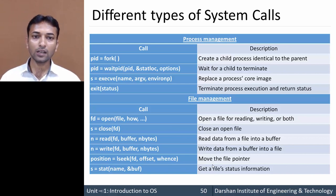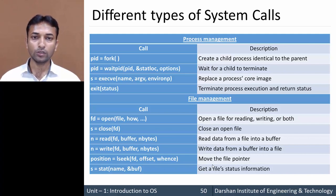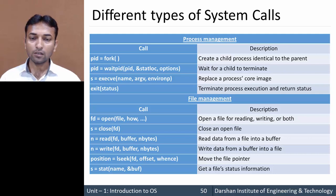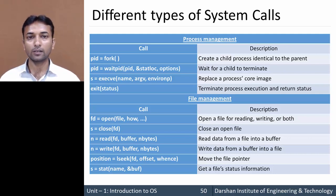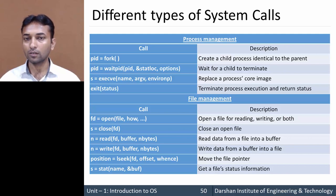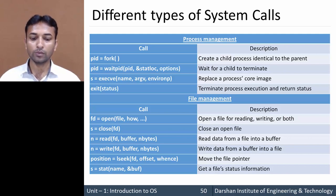So these are the various types of system calls in Unix. It is possible that some of these system calls are also present in Windows, and some are not available in Windows. Thank you very much.